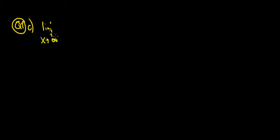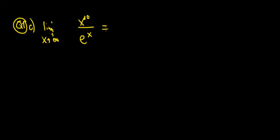Let's solve part C in this video. We have the limit as x approaches infinity of x to the power of 10 divided by e to the power of x. First step, let's try and substitute infinity into x. We would have infinity to the power of 10 — that's a very large number to the power of 10 — and e to the power of infinity, which is e to the power of a very large number.